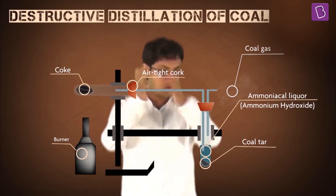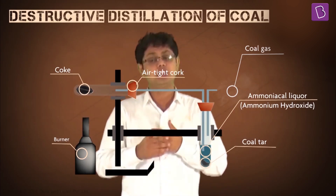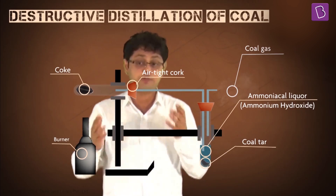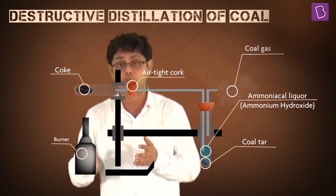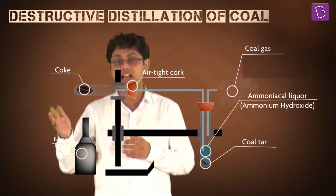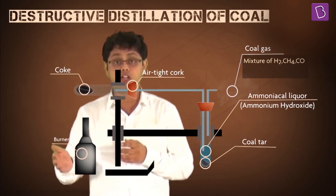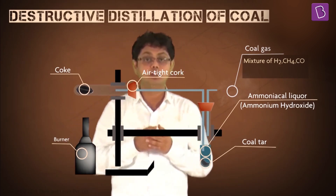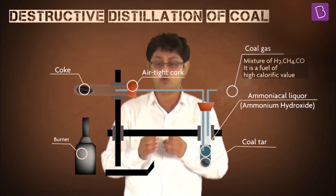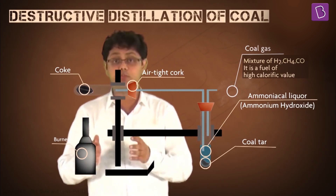We would definitely not do all this activity if it did not give us any end result — that is, if all of these products are not going to be used. Therefore we definitely have use for these products. The coal gas, also called town gas, is a mixture of hydrogen, methane and carbon monoxide, which are combustible, making coal gas an excellent fuel with high calorific values — that is, it gives out a lot of energy when it is burned.